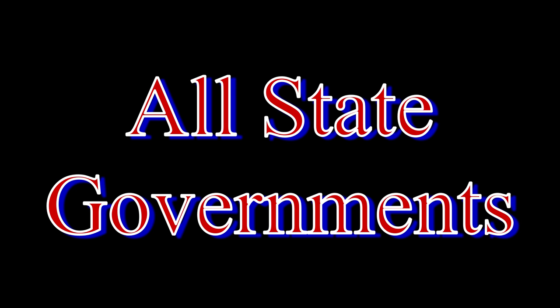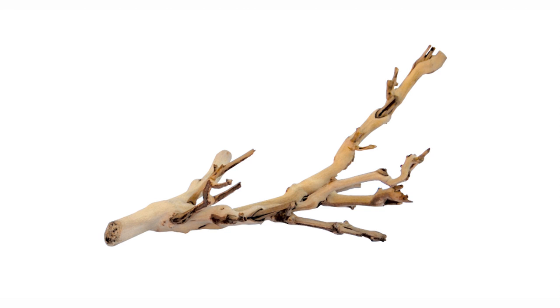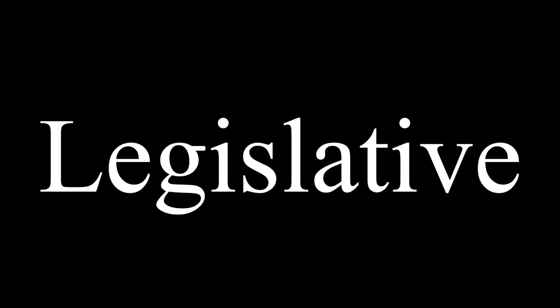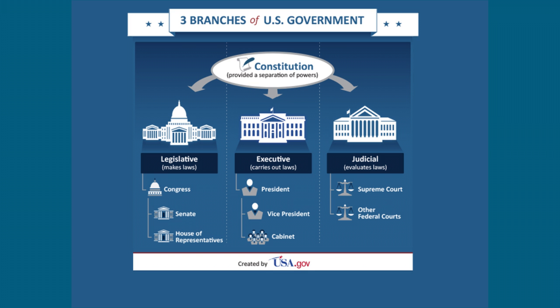All state governments are modeled after the federal government and consist of three branches: executive, legislative, and judicial. The federal government has powers vested by the U.S. Constitution in the Congress, the President, and the federal courts.